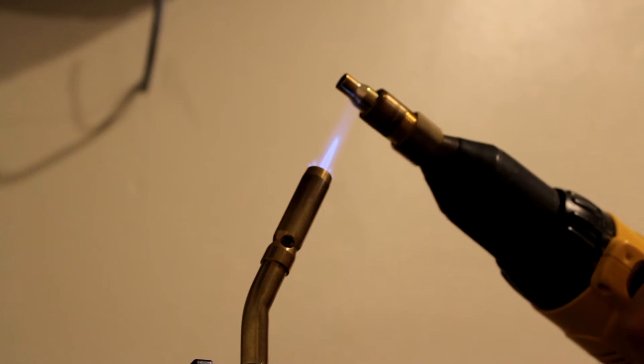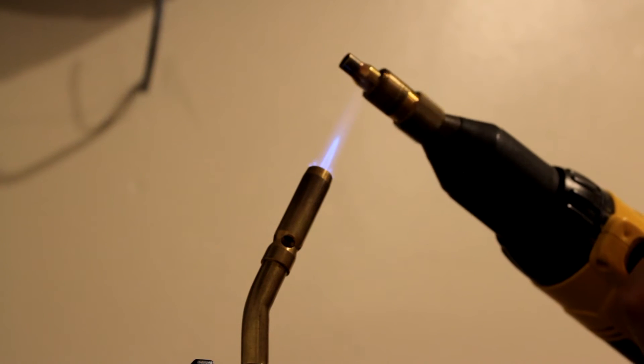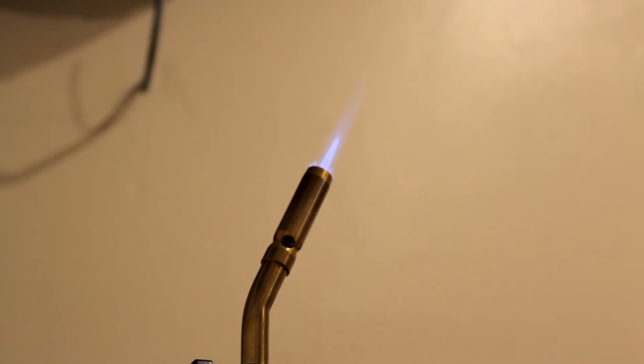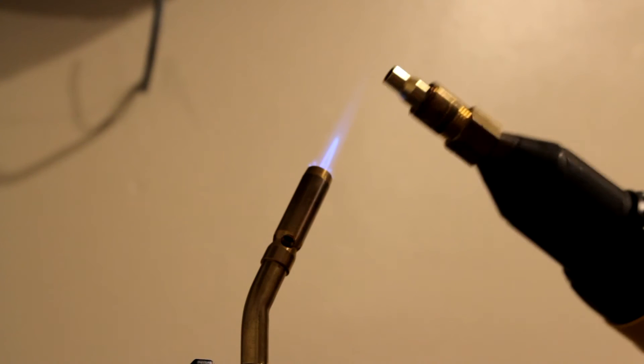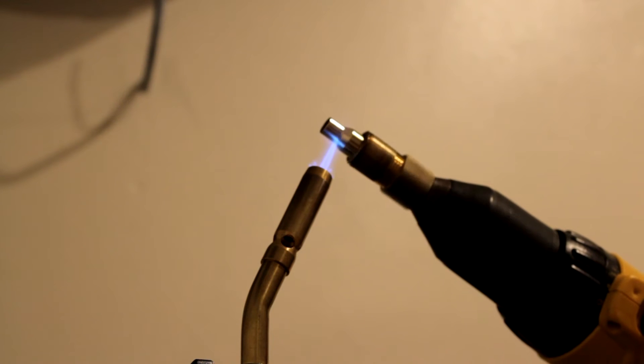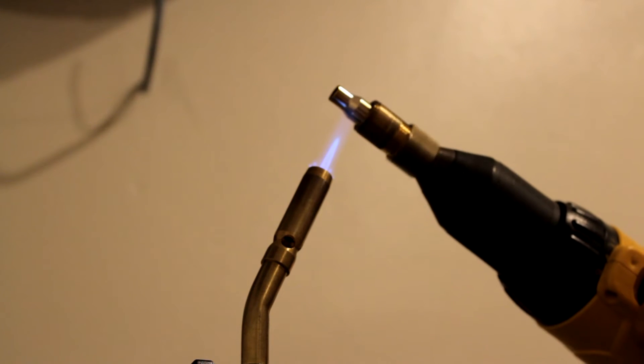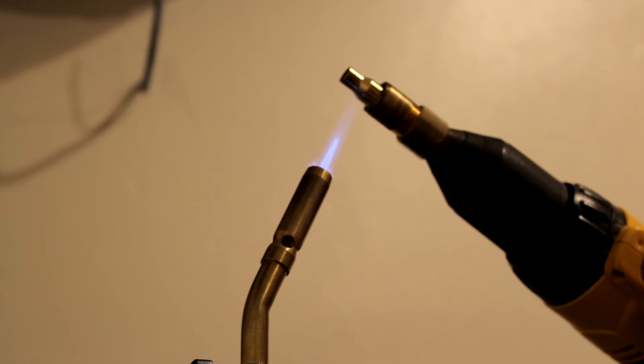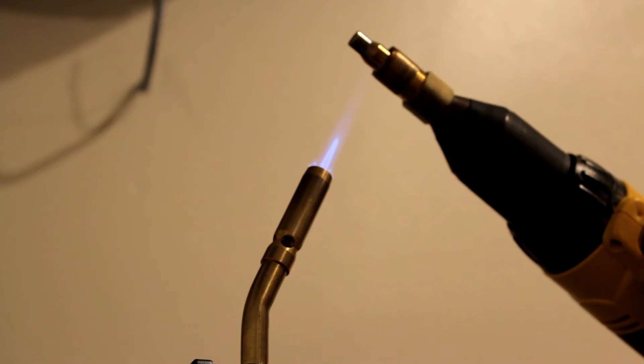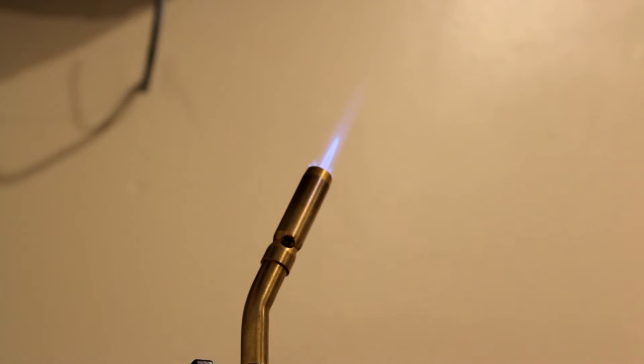I can see the change start from the very mouth of the case and spread down the length of the neck into the shoulder. And then once it gets just past that bend to the case wall, the shoulder, and it just starts to come around to the case wall, that's when I pull it out of the flame.